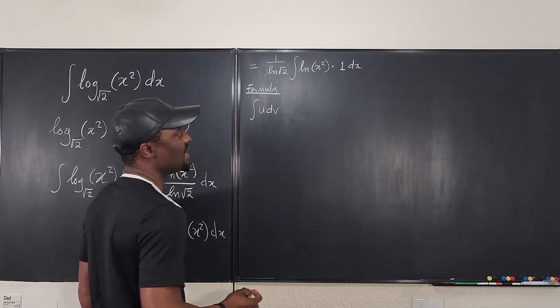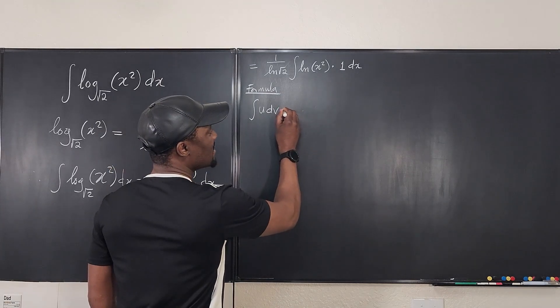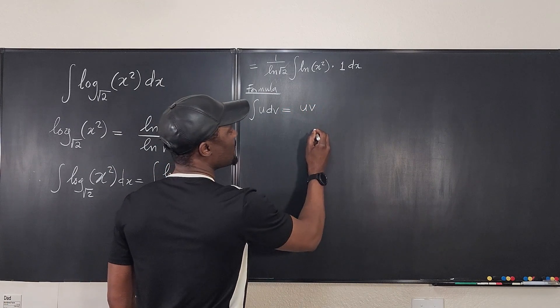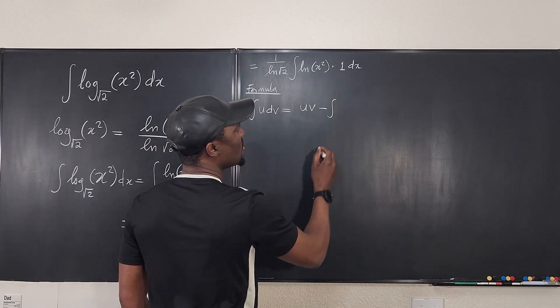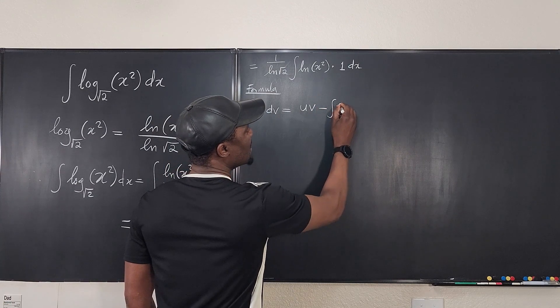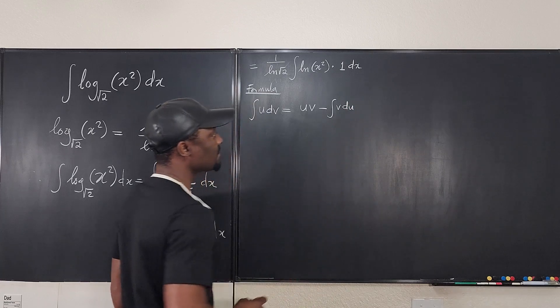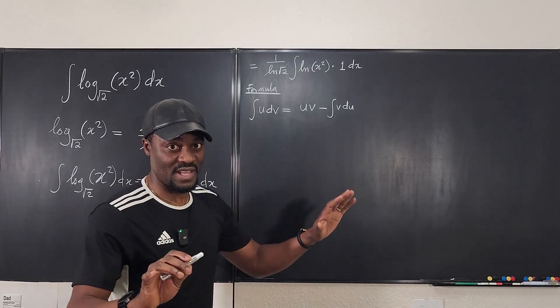I'm integrating u times dv, so I'm treating this as dv. And the answer I'm going to get is going to be u times v minus the integral of v times du. Let's work that out.